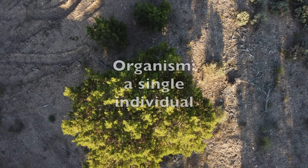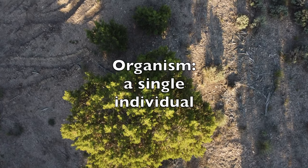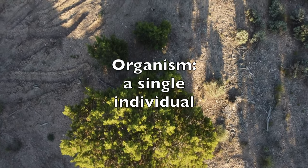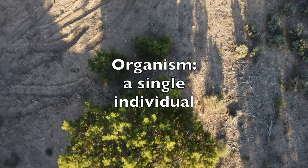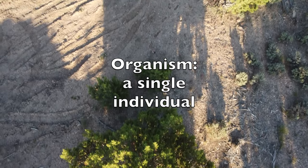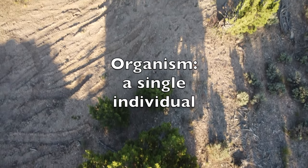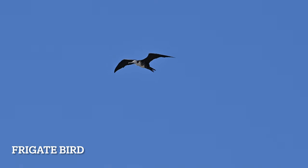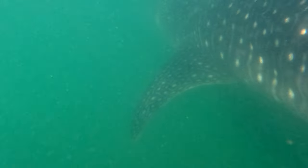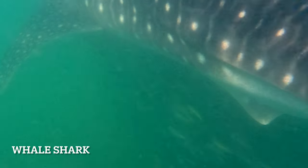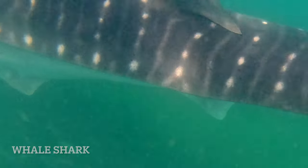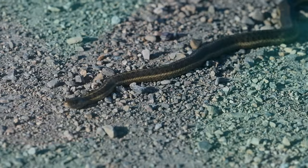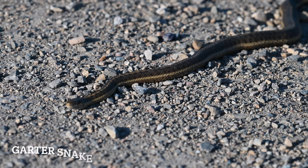The first level is organism. An organism is a single individual — like this single juniper tree here, which is only one individual living thing, or this single frigate bird, or this singular whale shark, or one garter snake.